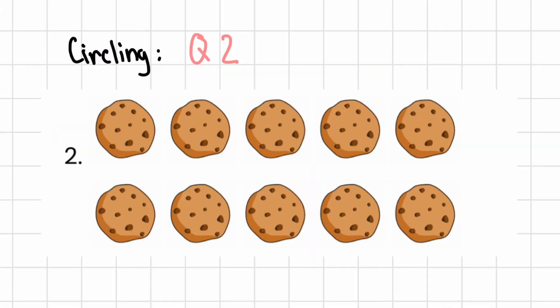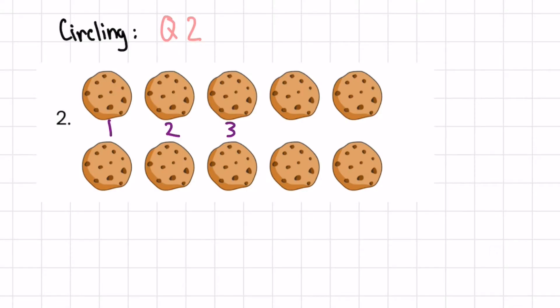Now, the second question. Let's count these cookies in sets of five. One, two, three, four, five. Here is one group.